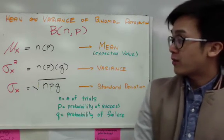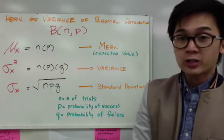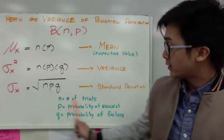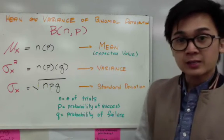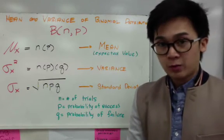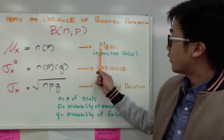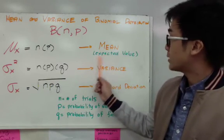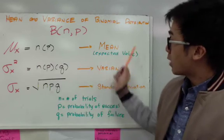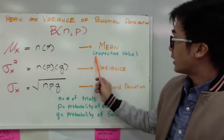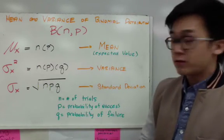And for the standard deviation, it's the square root of the variance, which is the square root of npq, where n is the number of trials, p is the probability of success, and q is the probability of failure. Now you have to remember that when you're finding the mean, you're also finding the expected value. Sometimes the wording of the problem requires the expected value as opposed to the mean, so you have to watch out for that.